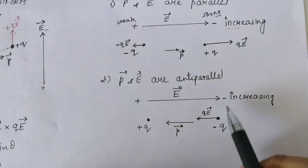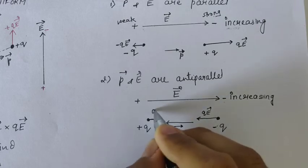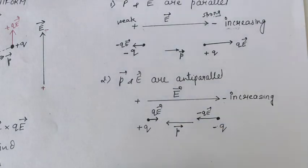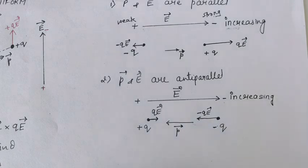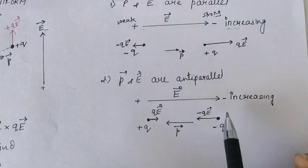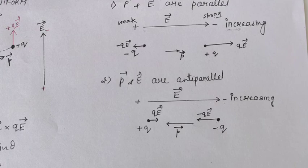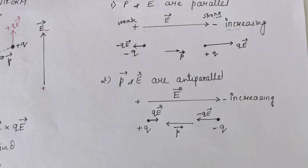Since like charges repel, the directions of forces are reversed for both charges. The resultant force is in the direction of the strongest force, which is from right to left — meaning toward the left. Therefore, the resultant force is in the direction of decreasing field. So the resultant force is in the direction of decreasing manner.